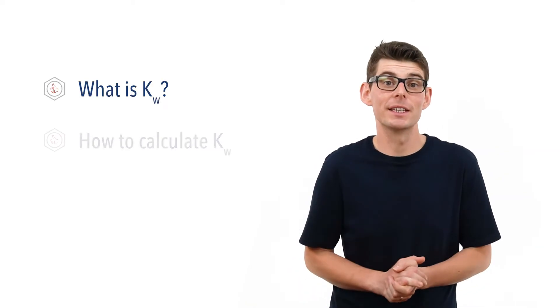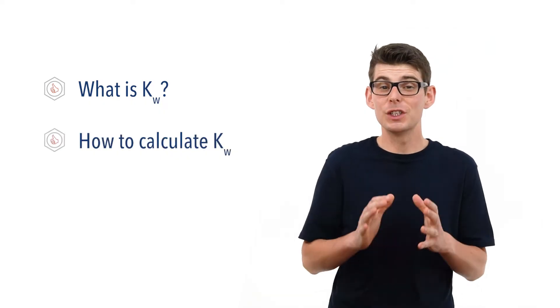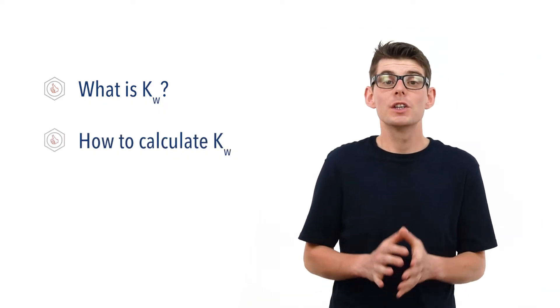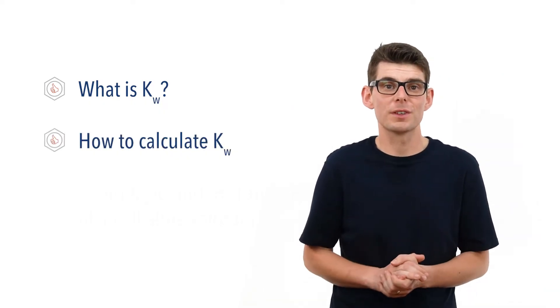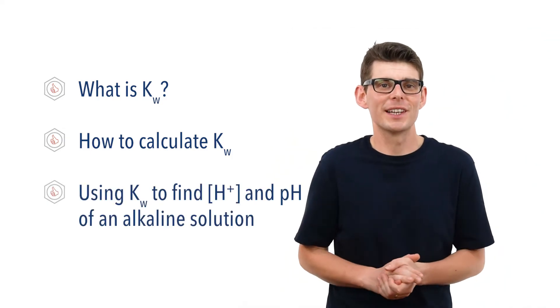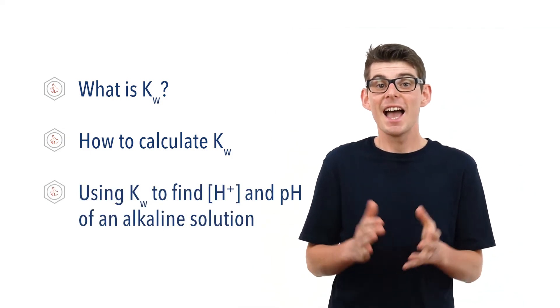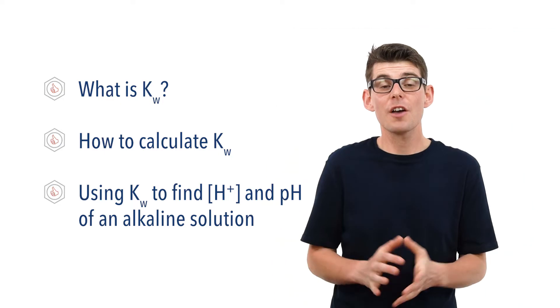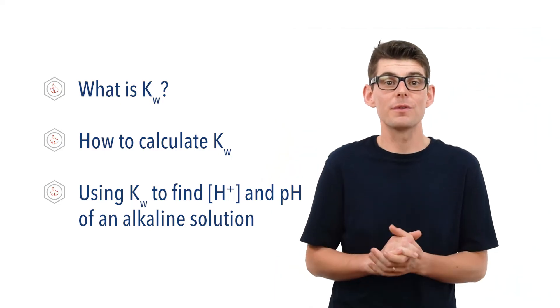Hello, Matt here from chemistrystudent.com. In this video we're going to look at the ionic product of water, Kw. We're going to talk about what Kw is, how to calculate Kw, and use the value of Kw to find the concentration of H plus ions and pH of an alkaline solution. Acids and bases and pH have been covered in separate videos — check the links in the description below.